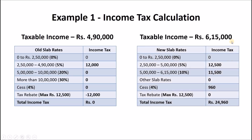For the new tax slab rates, taxable income is Rs 6,15,000. No income tax on income from Rs 0 to Rs 2.5 lakhs; 5% tax on income between Rs 2.5 lakhs to Rs 5 lakhs which equals Rs 12,500; 10% tax on income between Rs 5 lakhs to Rs 6,15,000 which equals Rs 11,500. Other tax slabs are not applicable. A 4% cess is applicable on this income tax which equals Rs 960, making your total income tax Rs 24,960.